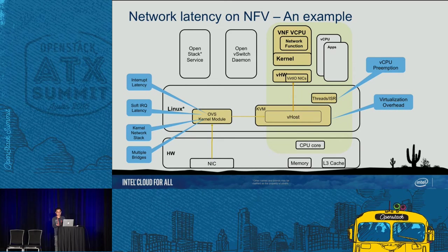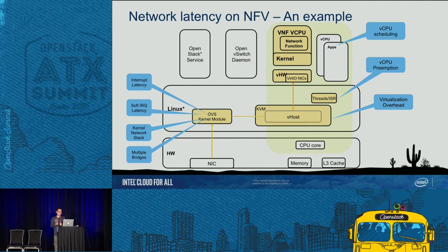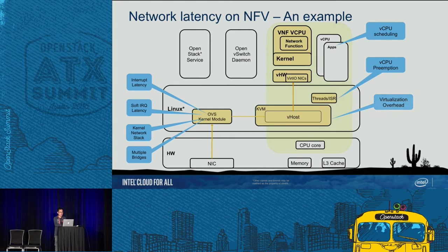Another latency source is that the VNF vCPU is sharing the same CPU core with other non-VNF vCPUs, other generic applications, or even the OpenStack Nova compute service. So the vCPU may be scheduled out and another application is running, causing vCPU scheduling cost. We want the vCPU not to be preempted by any kernel thread or ISR. Even when the vCPU is finally running and not preempted or scheduled out, it receives the packet and begins to handle it — just like in a physical network function scenario.